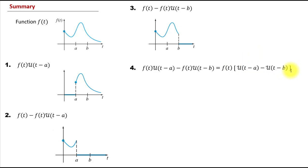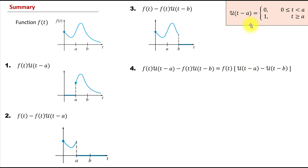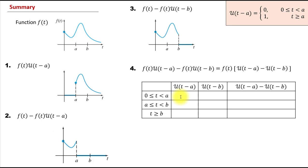Let's use a table to organize our thinking, bringing back the definition of the unit step function. For u(t-a): it equals 0 from 0 to a, then 1 from a to b, and still 1 after b. For u(t-b): it equals 0 from 0 to a, still 0 from a to b, and then 1 at b and after. Taking the difference u(t-a) minus u(t-b): 0 minus 0 is 0, 1 minus 0 is 1, and 1 minus 1 is 0.